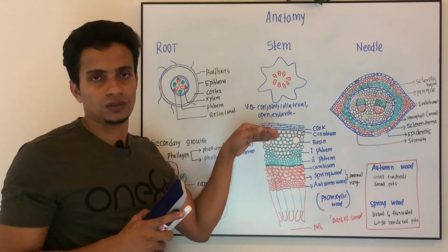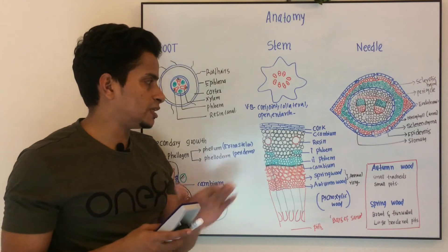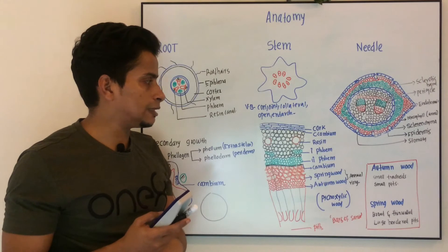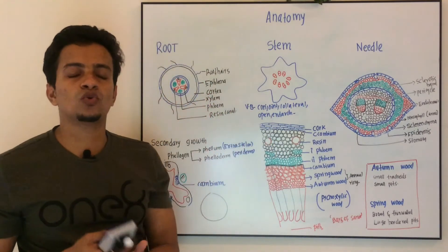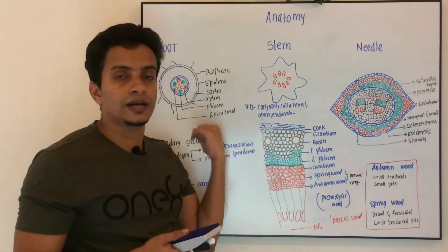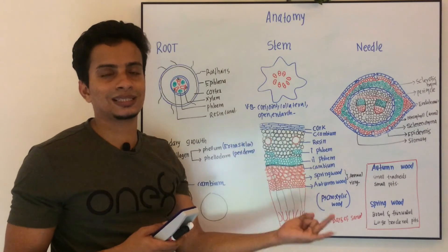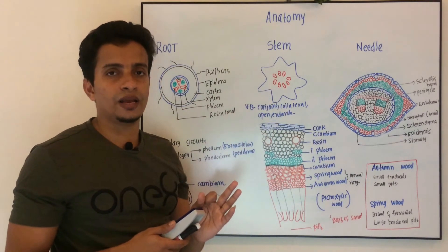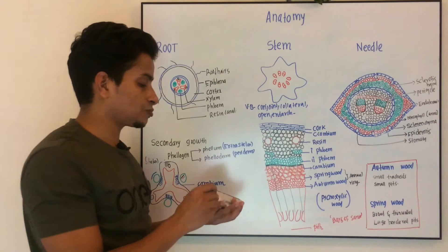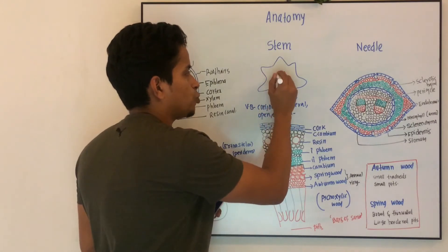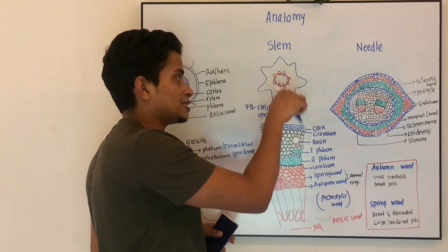Coming to secondary growth in the stem — it is similar to a dicot stem. Anatomical features: epidermis, cortex, and vascular bundles are arranged in the same way. Secondary growth occurs by the fusion of inter- and intra-fascicular cambium to form a cambium ring. This cambium ring will cut off secondary xylem towards the inside and secondary phloem towards the outside.